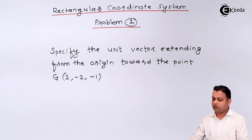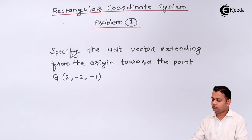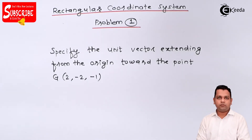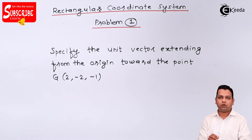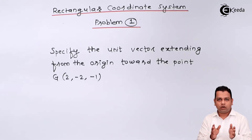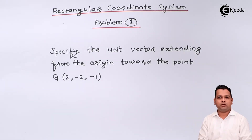Specify the unit vector extending from the origin towards the point capital G. After we read the problem statement, my suggestion is to always draw the graphical representation of the given data in the problem statement, so that the exact situation — what is given and what we need to evaluate — shall be clear.